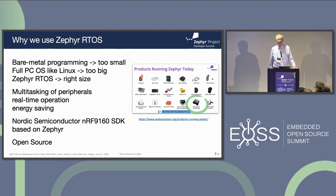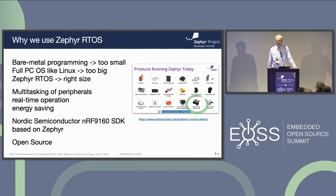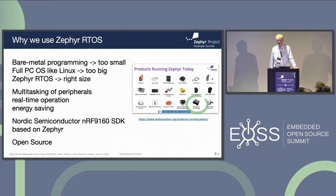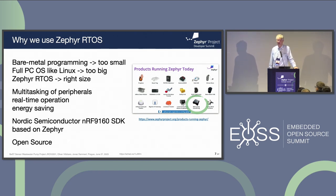Why do we use Zephyr? You probably all know bare metal programming, usually seen on a microcontroller. In this case it would not be capable enough, because we have multitasking, we have requirements for real-time operation, and it needs to be energy saving. If you have multiple sensors working at the same time, bare metal programming is simply not sufficient. On the other hand, a full PC operating system such as Linux would be too large, and it would use too much energy and memory. Zephyr is actually exactly the right size, as it turned out.